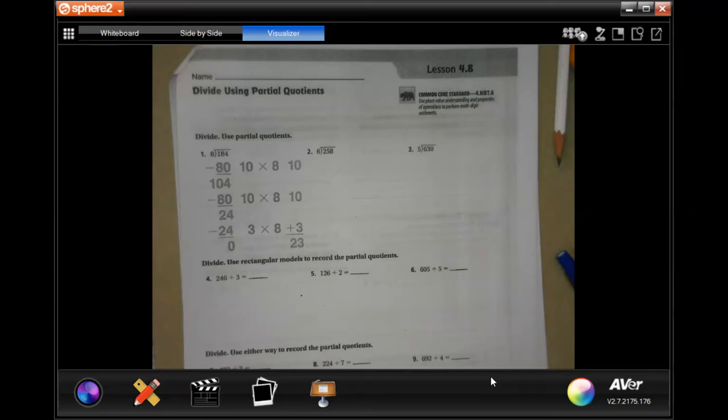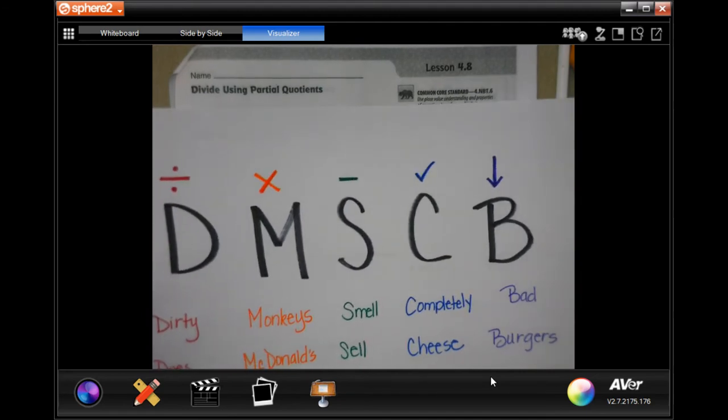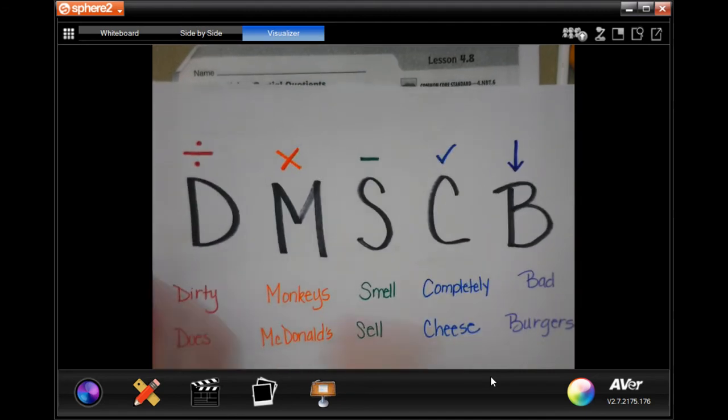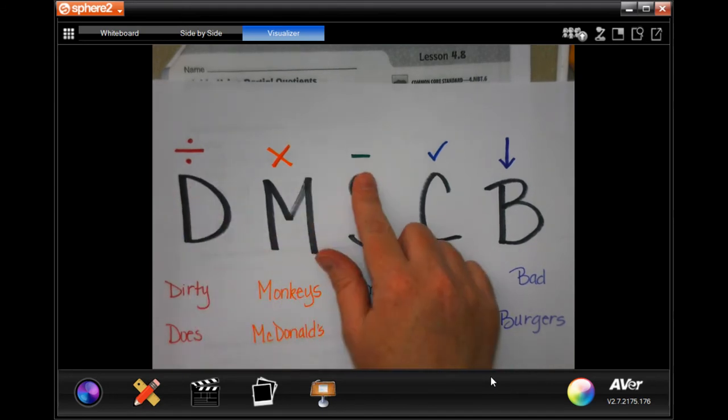Hey, welcome to fourth grade Chapter 4 Lesson 8. We're going to get started. You should pause this and write this down at the top of your paper, at least the letters. We remember this is DMSBC: Dirty Monkey Smell Completely Bad, or Does McDonald's Sell Cheeseburgers. It means Divide, Multiply, Subtract, Check, and Bring Down. Those are our steps for division.